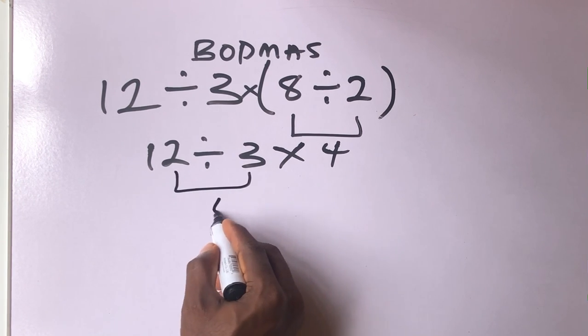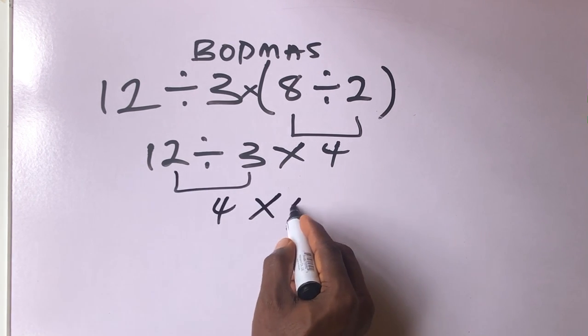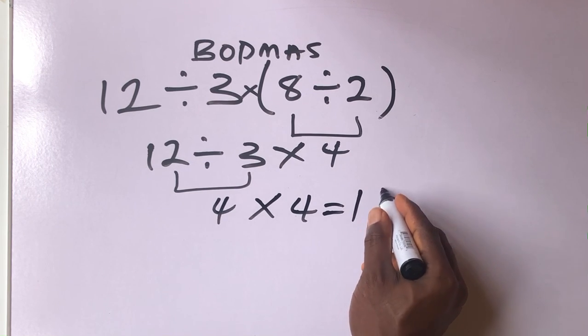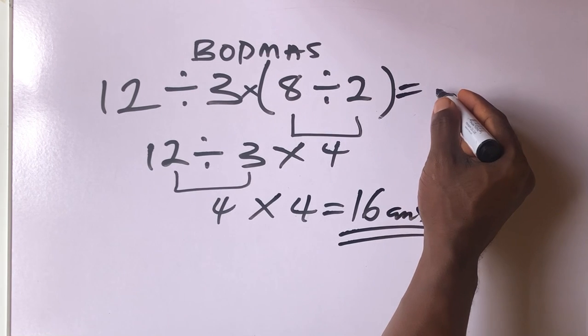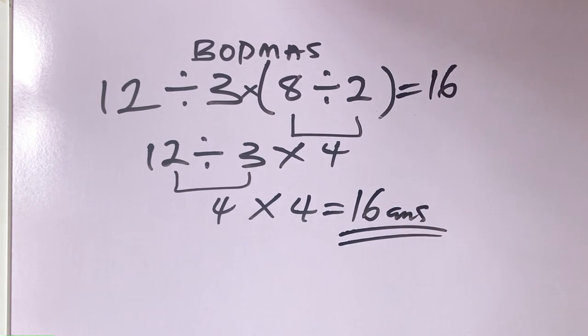This will give us 4. 4 times 4 is equal to 16. This is our final answer, so our final answer is 16.